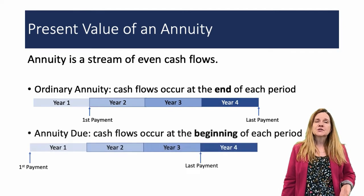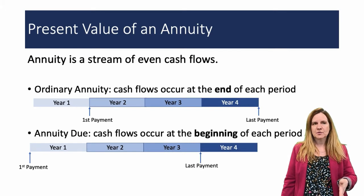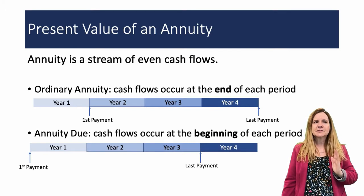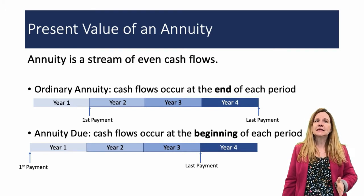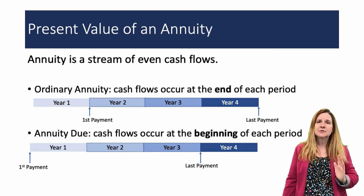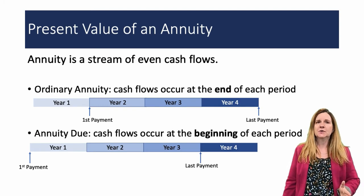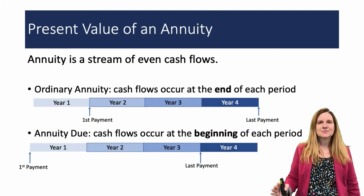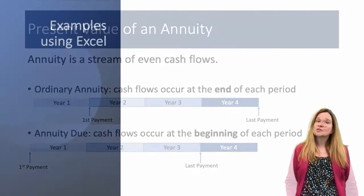The annuity due starts right when you sign the agreement — it's at the beginning. The cash flow occurs at the beginning of each period and then it ends at the beginning of the last period.